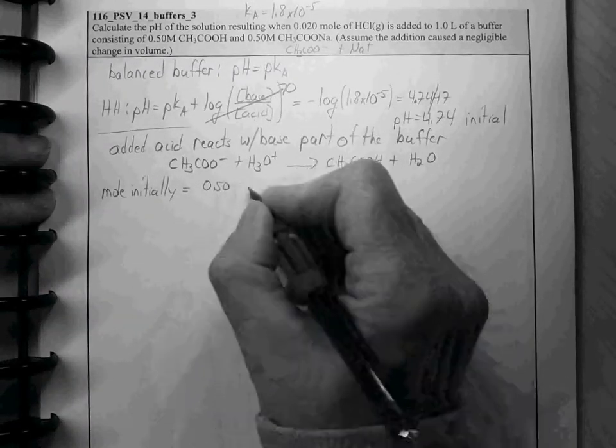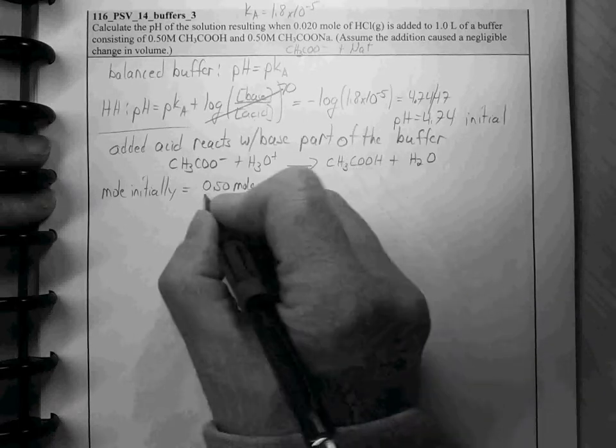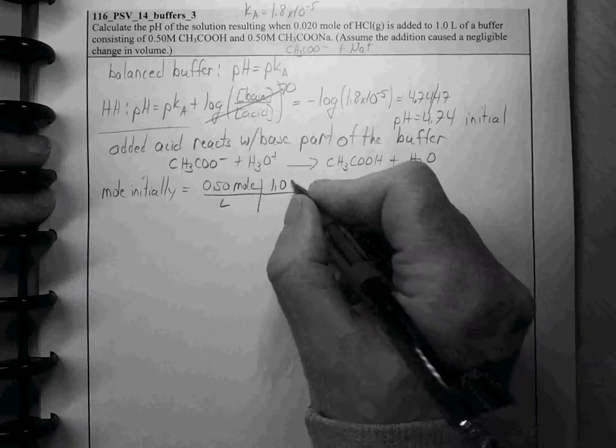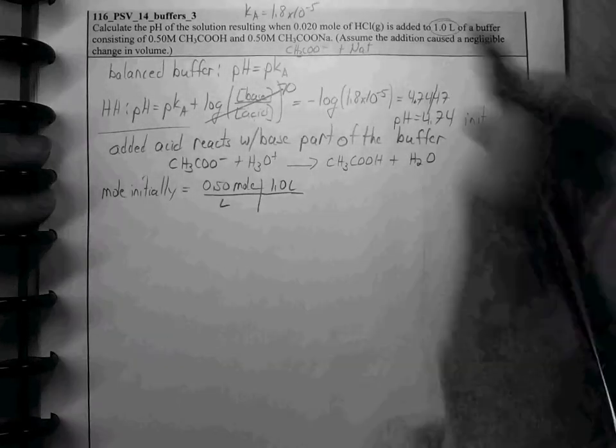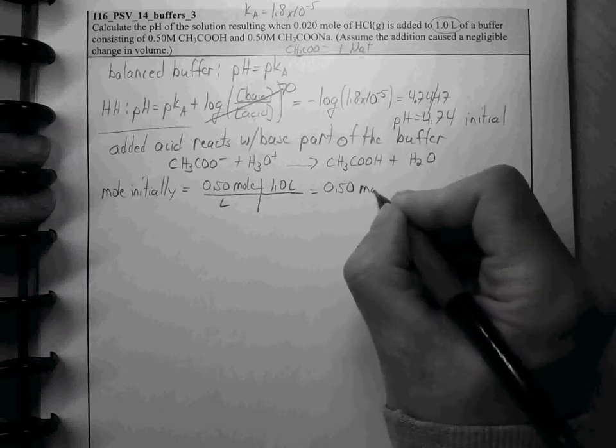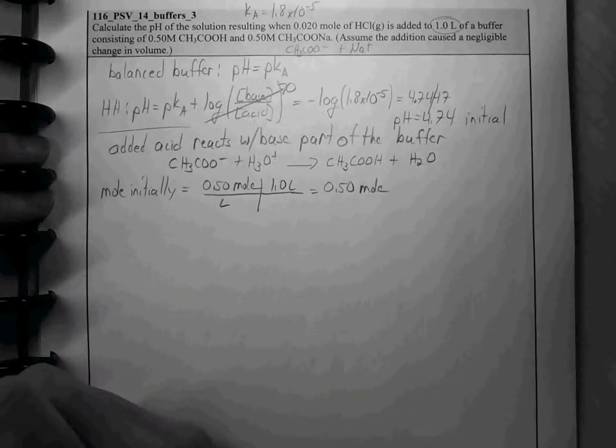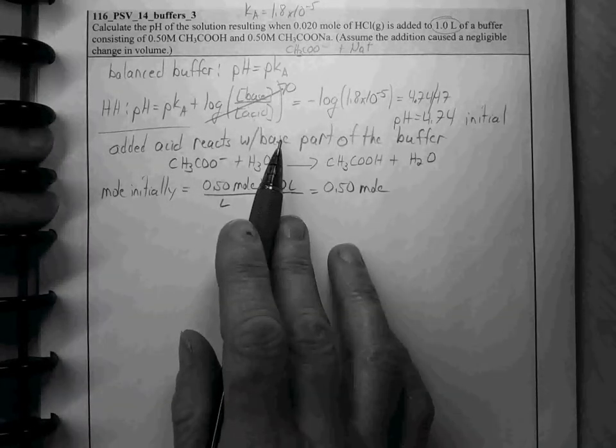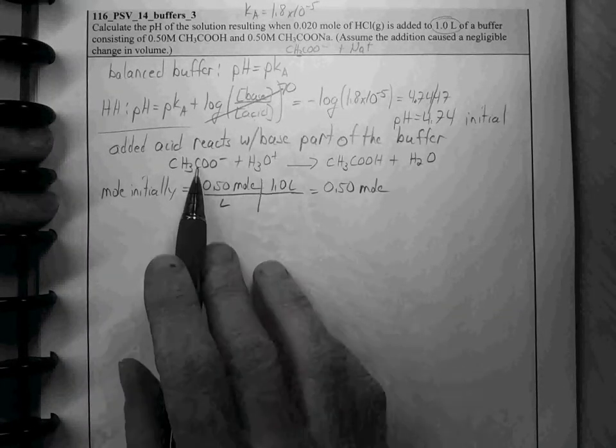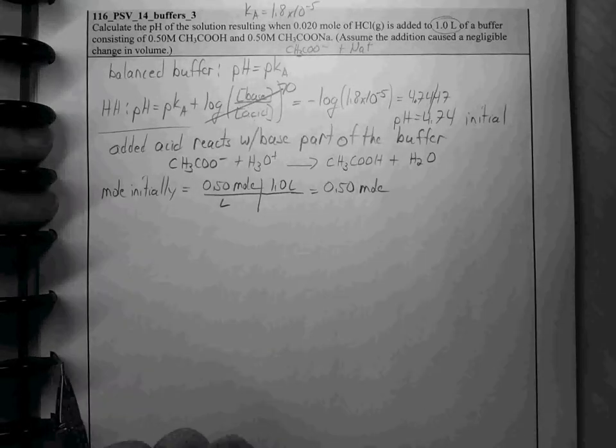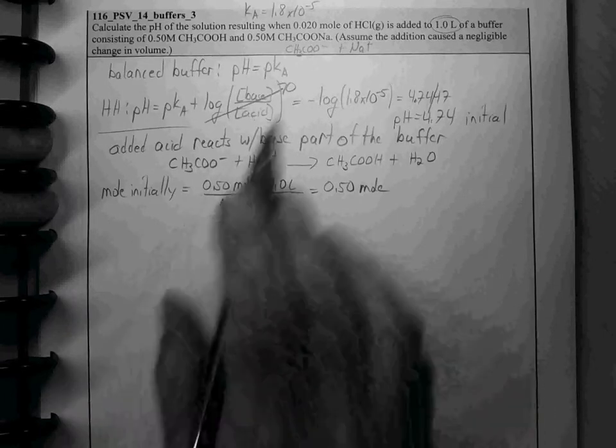Molarity times volume. For each 0.5 moles per liter, and this is in a 1 liter volume of the buffer. So, we have 0.50 moles of both the acid and the base. The added acid reacts with the base part of the buffer. So, we've lost some of our base, and we've gained an equal amount of that acid.